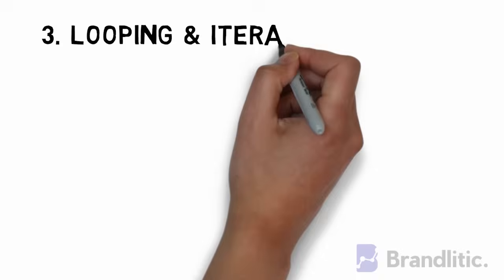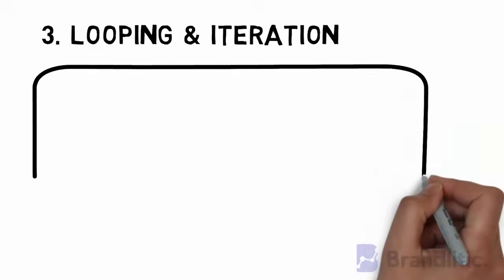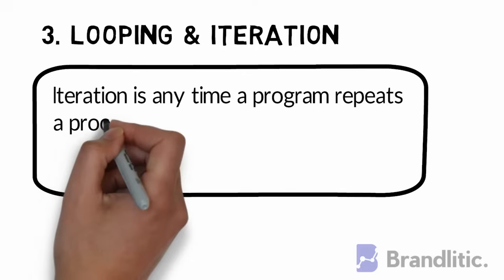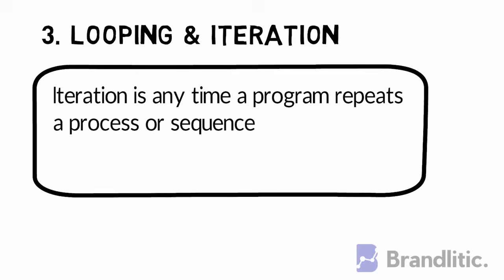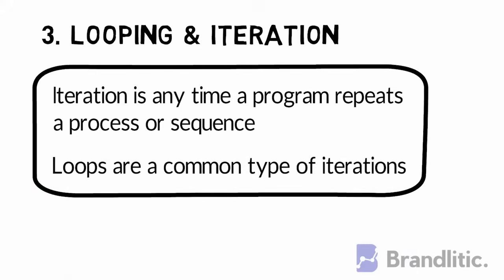3. Looping and Iterations. An iteration is any time a program repeats a process or sequence. Loops are a common type of iterations in which a program performs a certain action for an infinite number of times until a new condition is met.